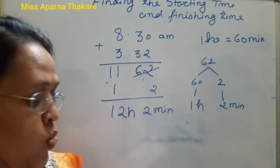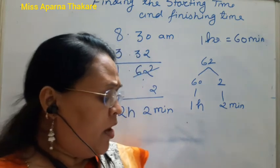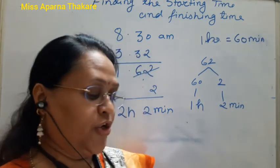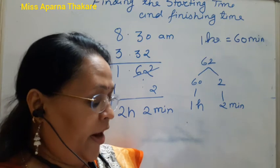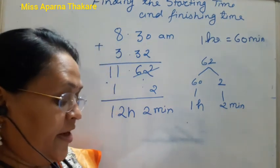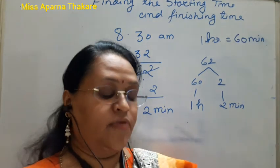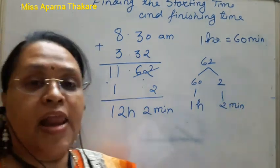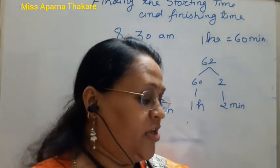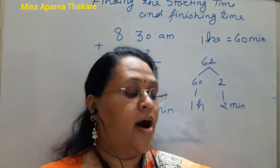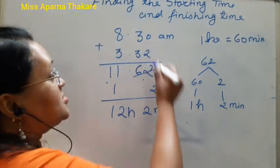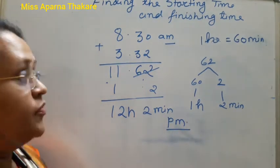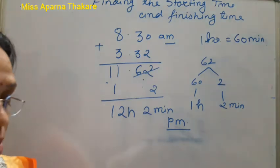So Ajay finished his work at 12 hours 2 minutes. To summarize: 8:30 AM plus 3 hours gives 11:30 AM, and then adding 32 minutes — converting to 1 hour 2 minutes — gives us 12 hours 2 minutes, which is 12:02 PM. He started in the AM and ended in the PM.